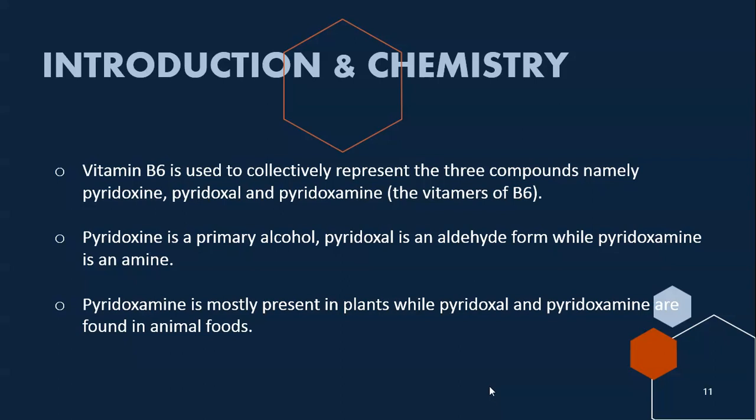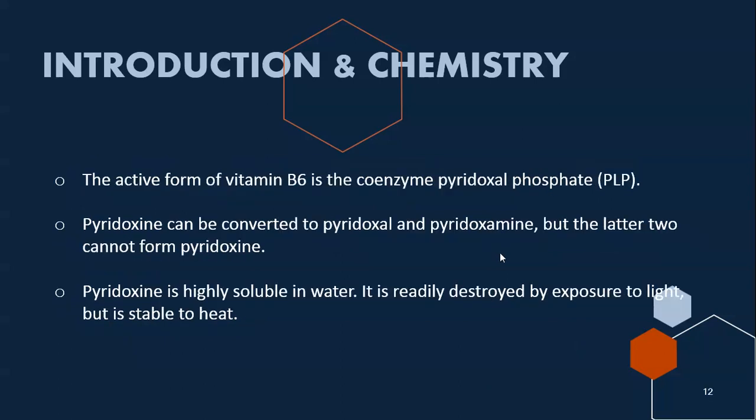There are both plant sources and animal sources of Vitamin B6. The active form of Vitamin B6 is the coenzyme pyridoxal phosphate (PLP). Pyridoxine can be converted into pyridoxal and pyridoxamine, but the latter two cannot be converted back into pyridoxine. Pyridoxine is highly soluble in water and is readily destroyed by exposure to light, but it is stable to heat.